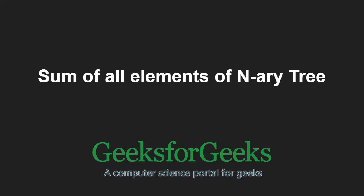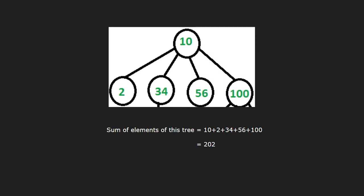First, let us take an example. The sum of elements of this tree will be 10 plus 2 plus 34 plus 56 plus 100, which is 202.